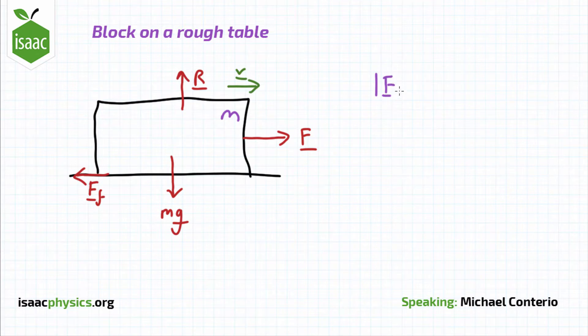The size of this frictional force is given by the coefficient of friction times by the size of the normal reaction force.